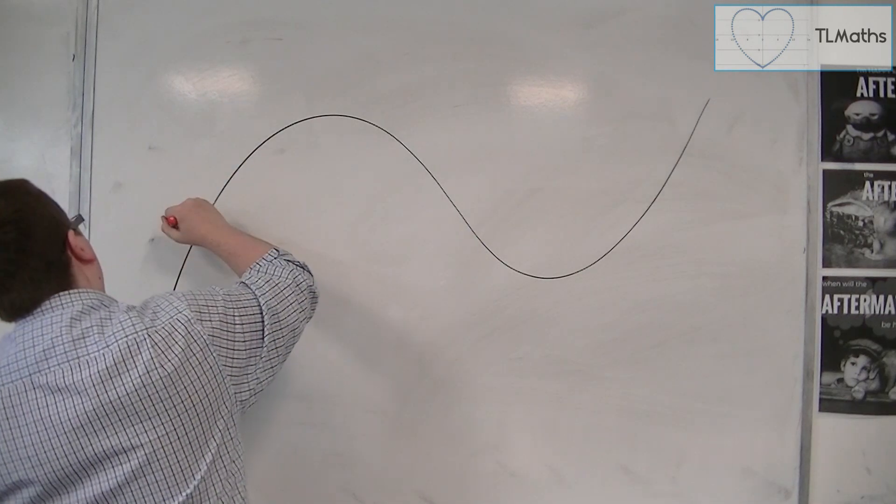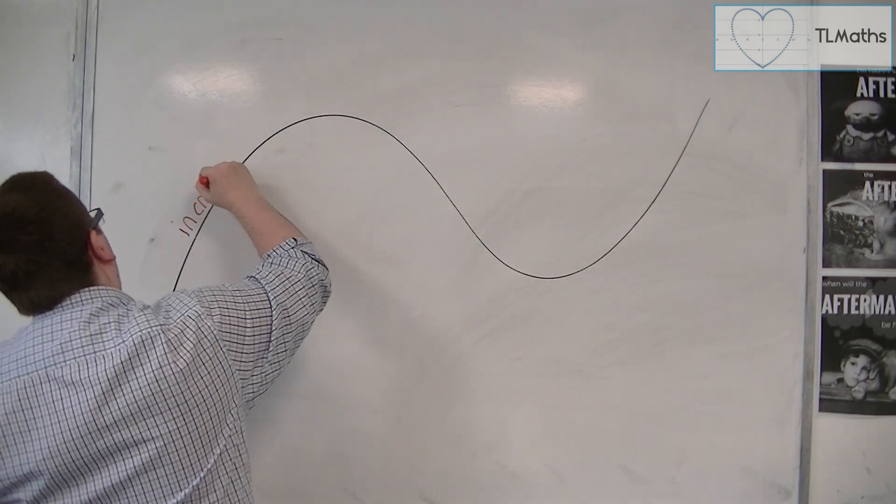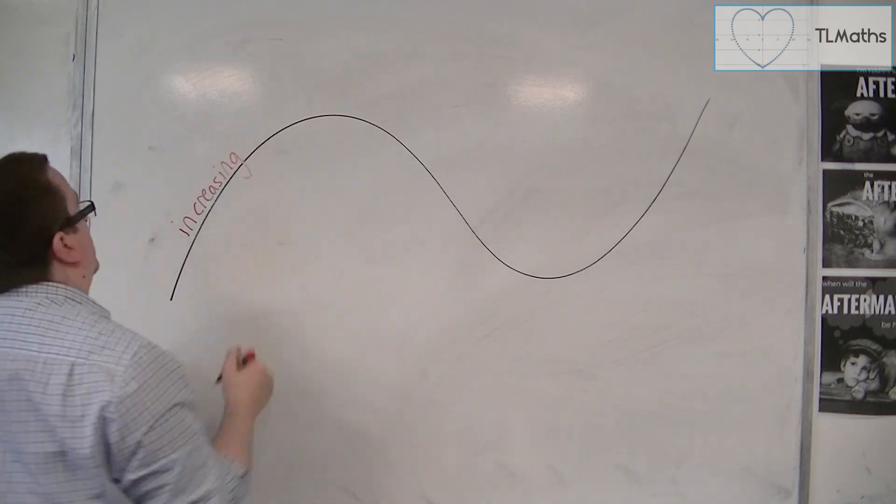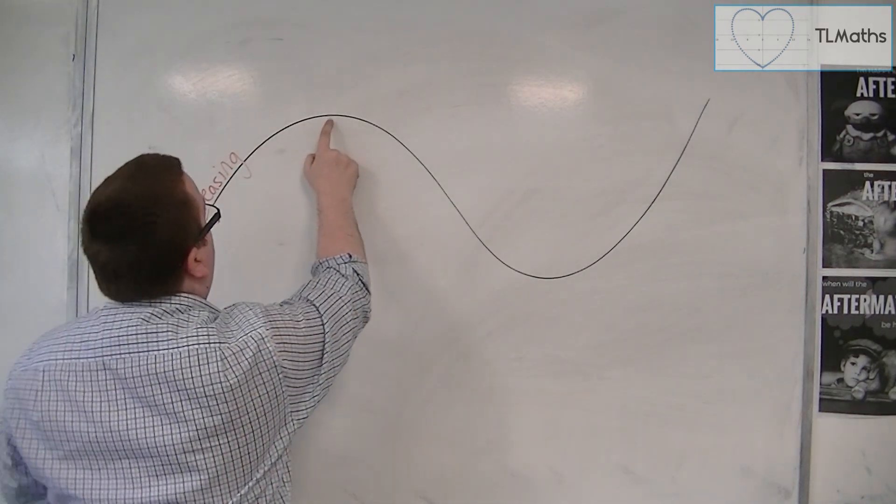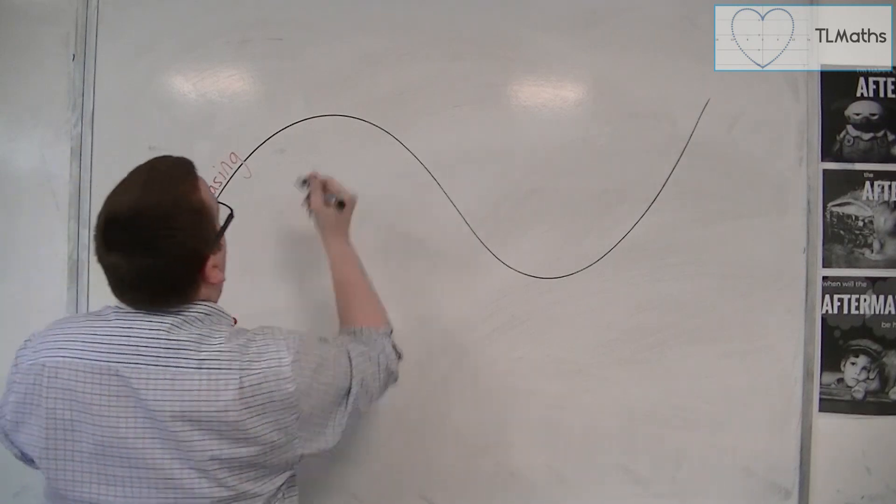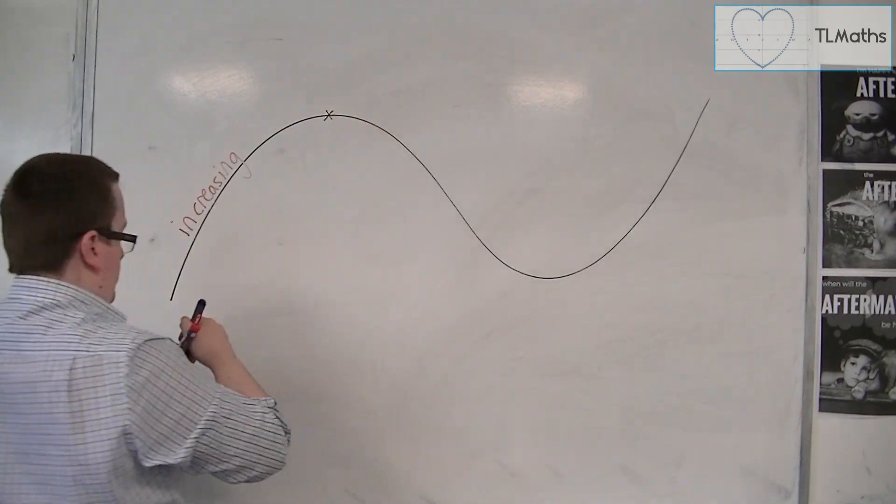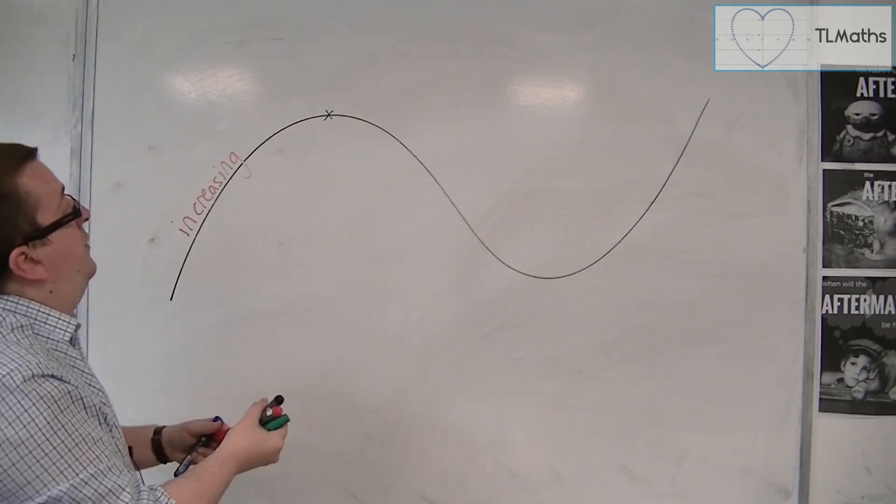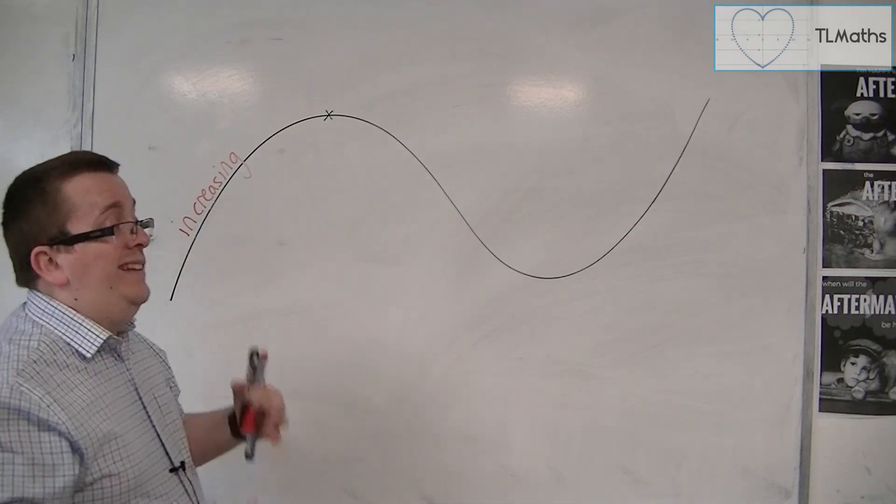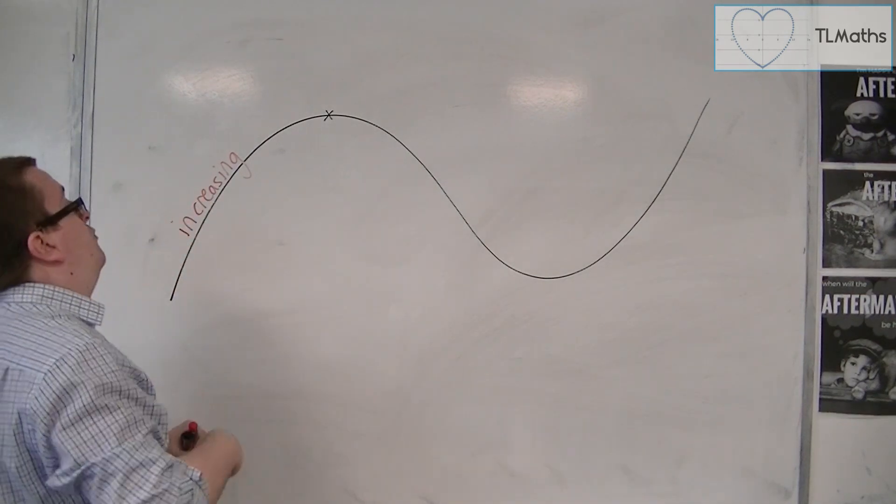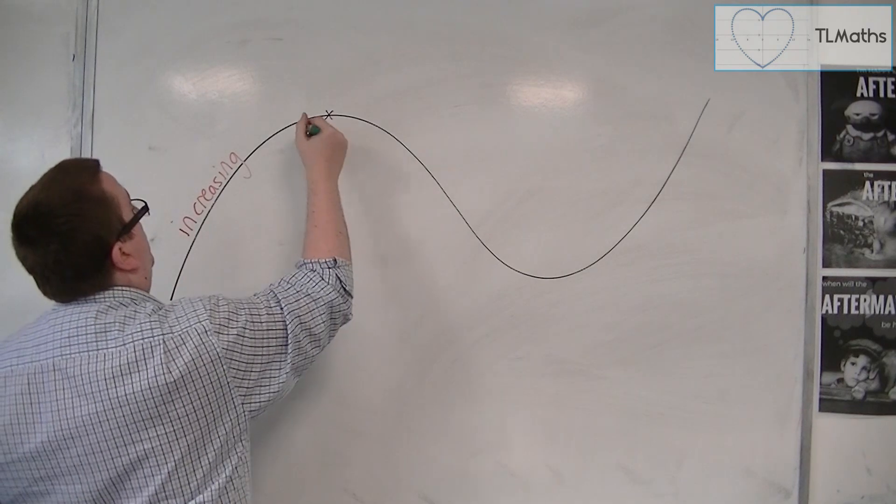So we can identify particular bits of this curve and we can first of all identify that here the curve is increasing and then it gets to this point here. Let's identify this point clearly. And this, as I referred to, is a turning point and it's otherwise referred to as a stationary point.